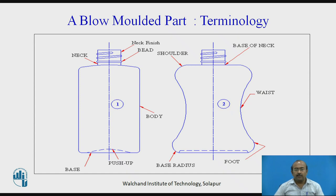Let us see a few of the terminologies in a blow molded part. Normally we are considering a bottle-like part. Starting from the base, there is the base, then the push-up (to stabilize the product on a platform), the body (vertical geometry), the neck, the bead, and the neck finish. On the right side: base radius, the foot (strongly supporting the job), the waist, the shoulder, and the base of the neck. All these terminologies are required while designing the mold.